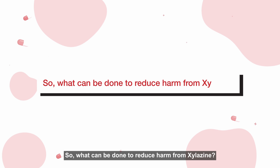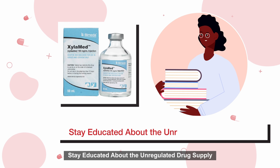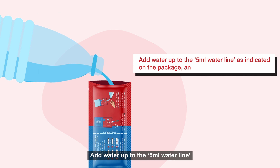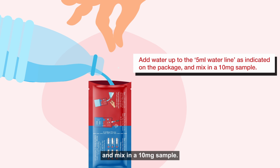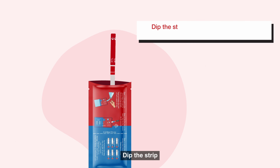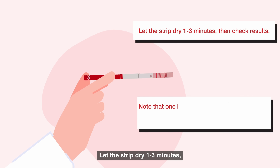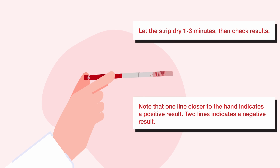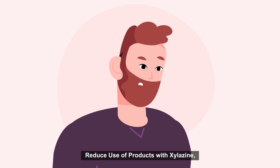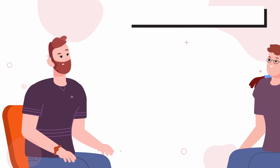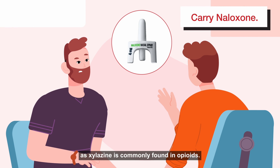So what can be done to reduce harm from Xylazine? Stay educated about the unregulated drug supply. Test the product using a Xylazine test strip: add water up to the five milliliter water line as indicated on the package and mix in a 10 milligram sample. Dip the strip to the max line into the solution for 60 seconds. Let the strip dry one to three minutes, then check results. Reduce use of products with Xylazine if possible. Address Xylazine wounds as soon as possible. Avoid using alone if possible. Carry naloxone as Xylazine is commonly found in opioids.